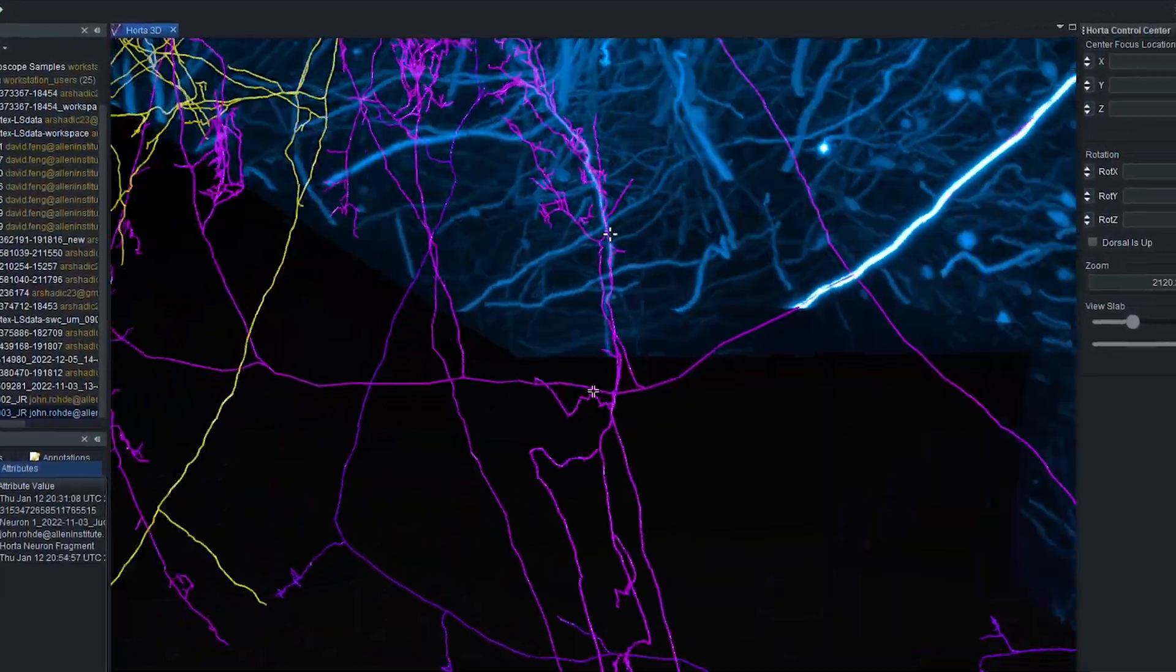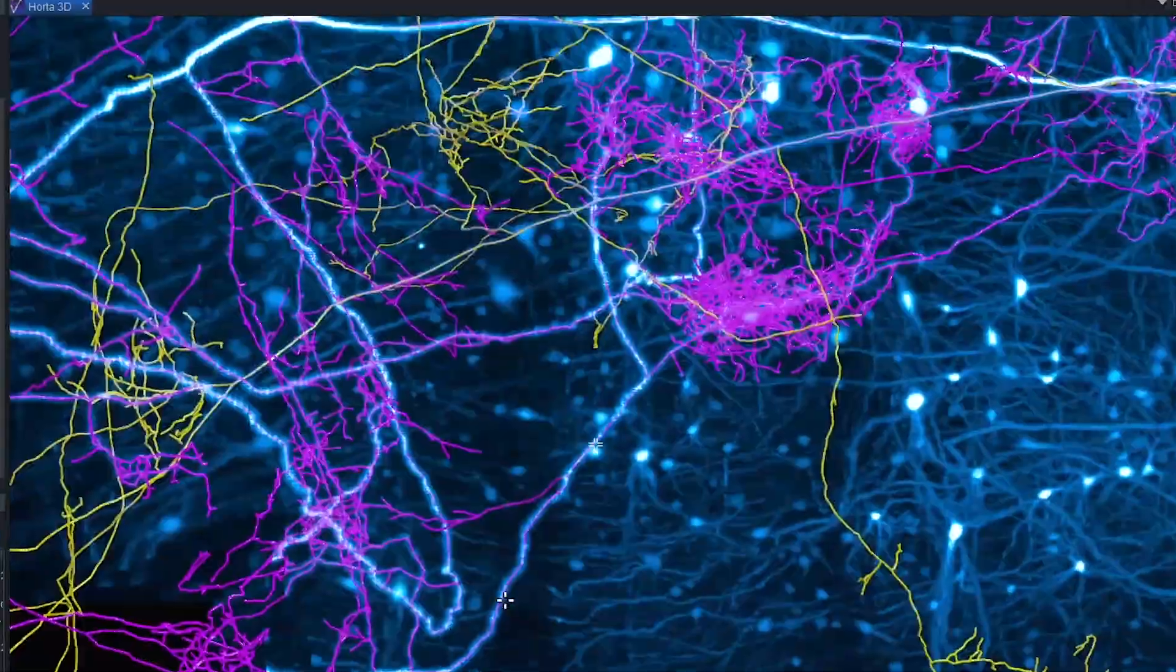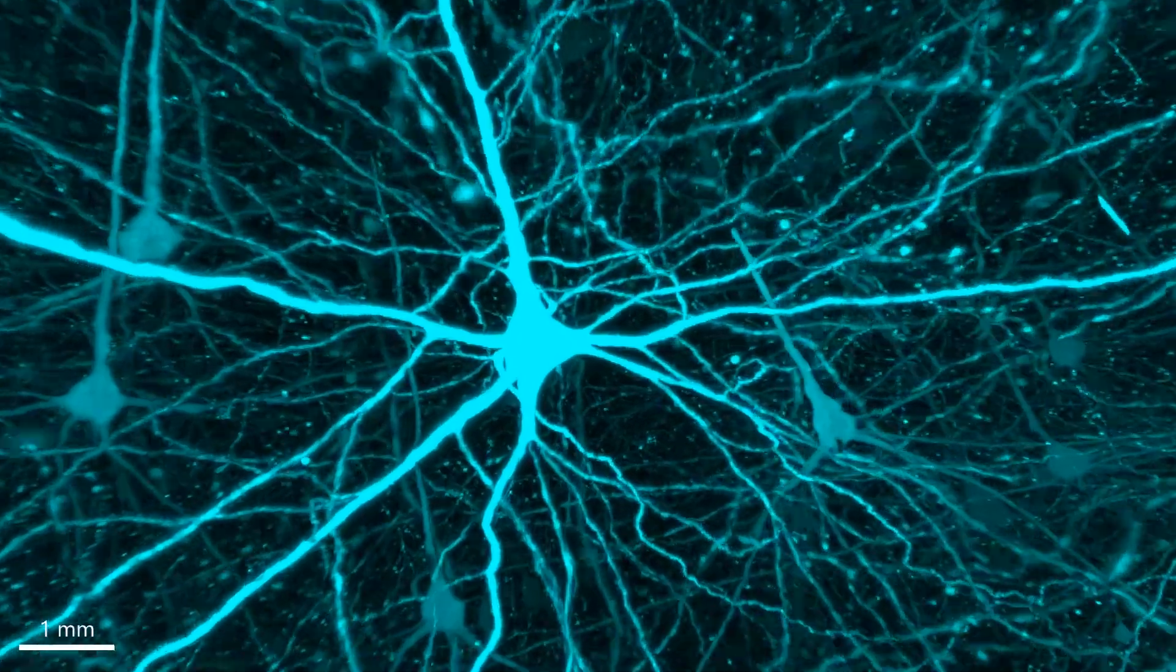We then over the course of several days will build up a large 3D panorama of the fluorescence within that brain which will give us the 3D map of the circuitry of those axons.